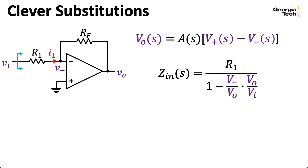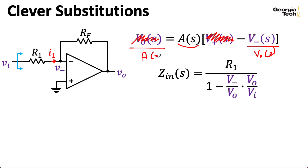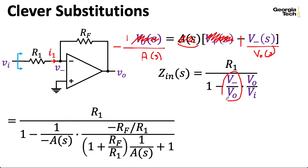Our output is going to be equal to our transfer function A for the original op amp times the voltage at the positive terminal minus the voltage at the negative terminal. The voltage at the positive terminal is zero, so this goes away. Now I could divide both sides of the expression by VO, which eliminates it. And then I can divide both sides by A(s), so that goes away too. So I can take this V minus over VO term and replace it with 1 over negative A(s).